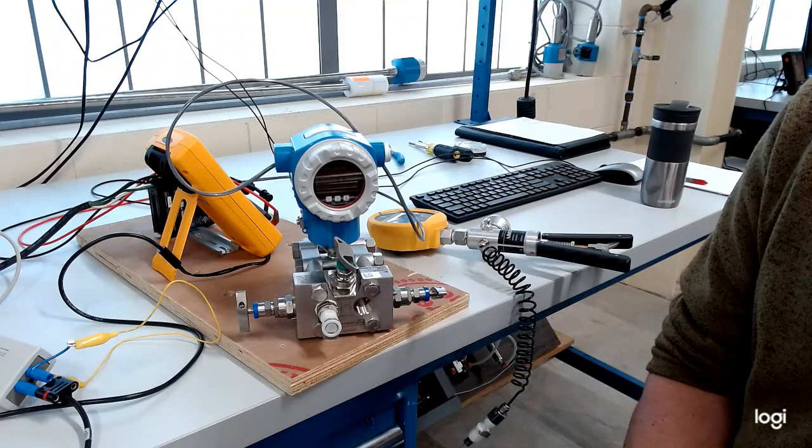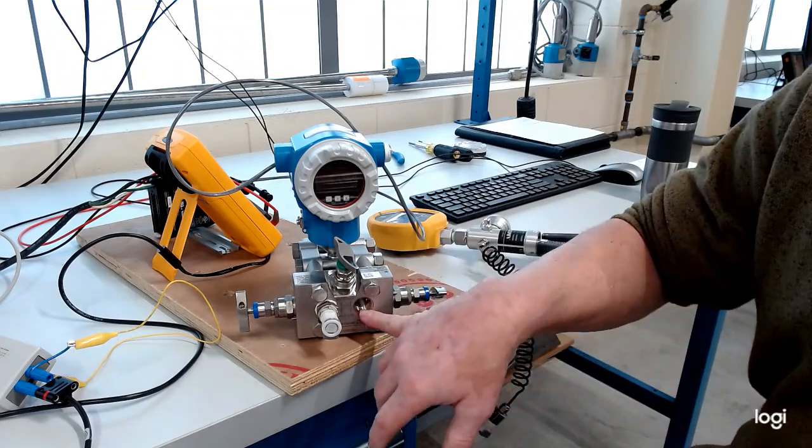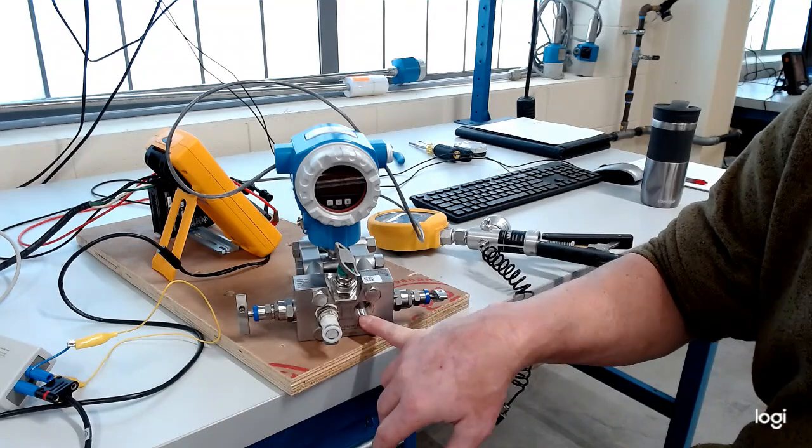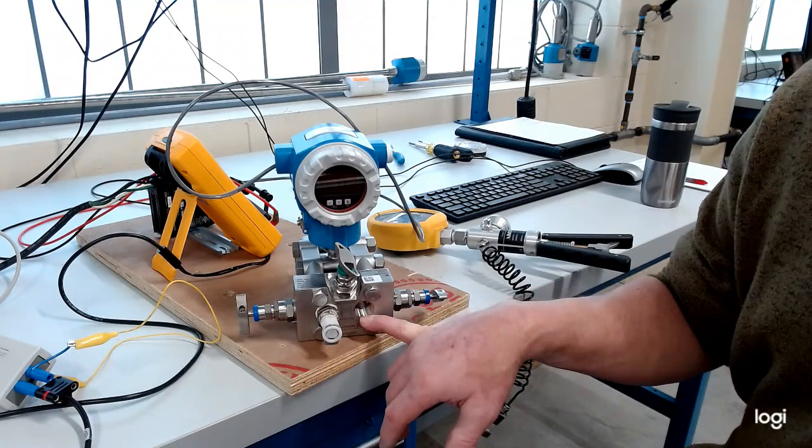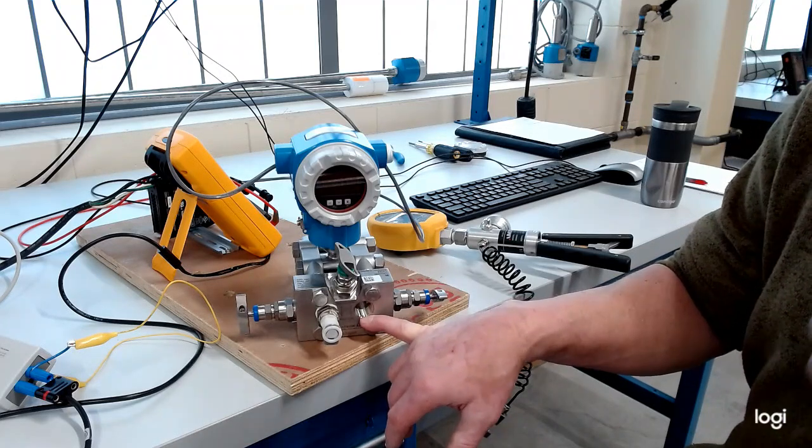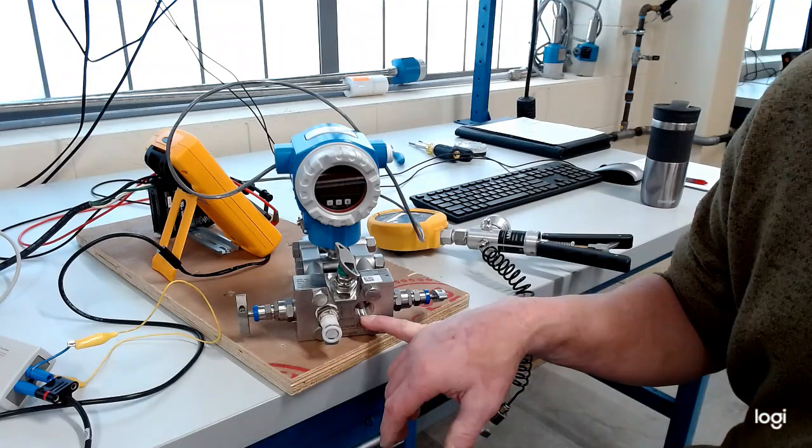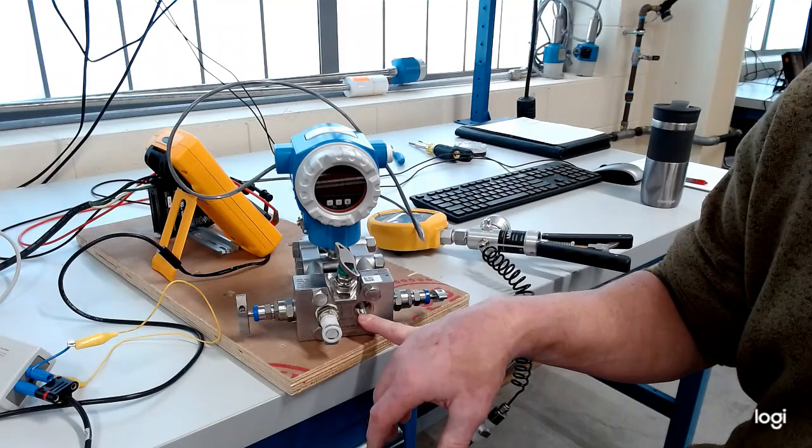That's definitely where we want to be on a starting point after we've got this instrument installed. Now, once it's installed, we're going to go ahead and depending on the application, we may or may not use the low pressure side. If we're trying to measure level in a tank that has an open top or vented to atmosphere, then what we're going to do with this low side is not hook it to the tank at all.